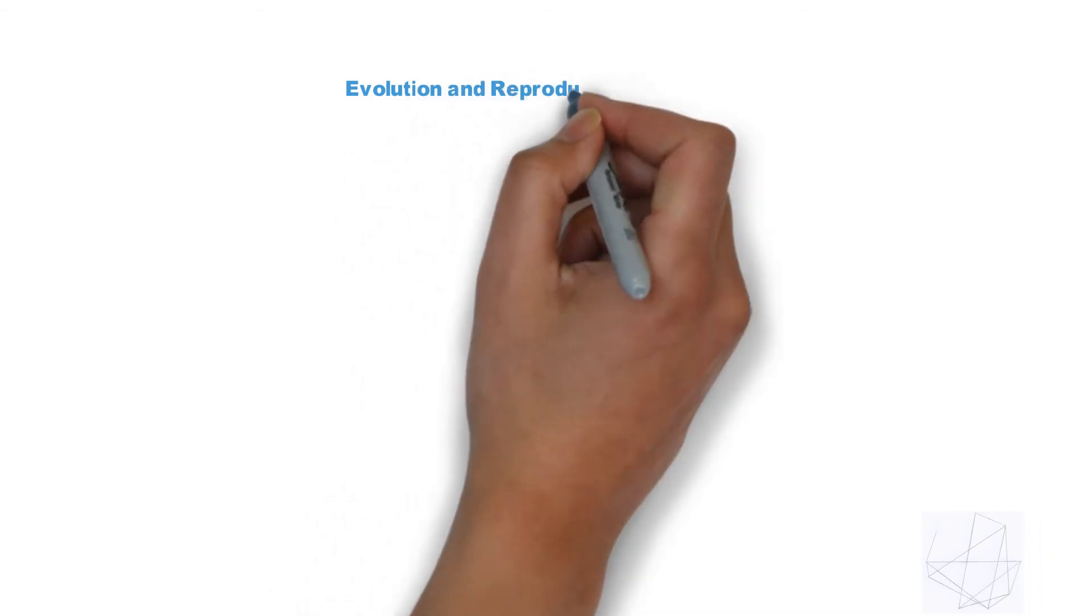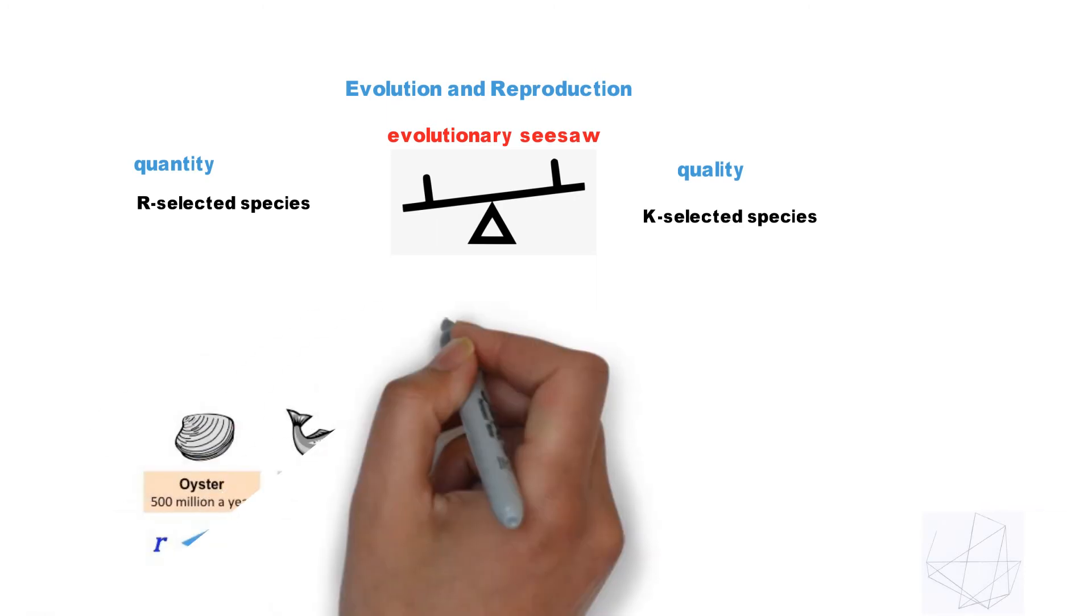this is the trade-off between quantity and quality. R-selected species or R-strategists emphasize high growth rates and populations lower than carrying capacity.